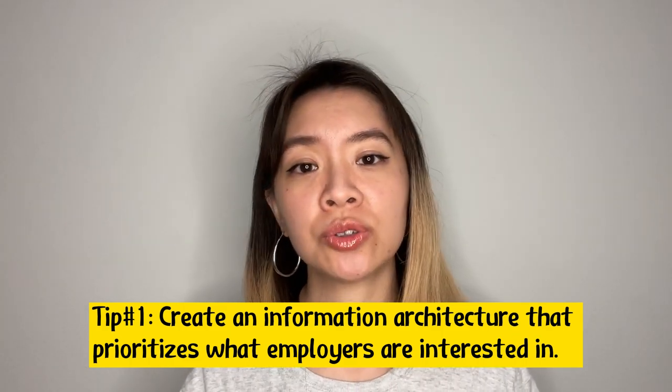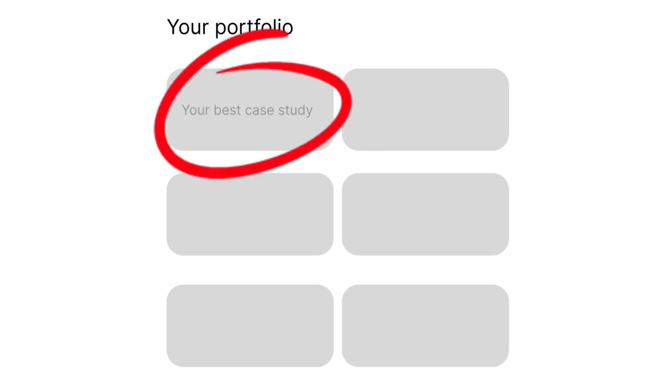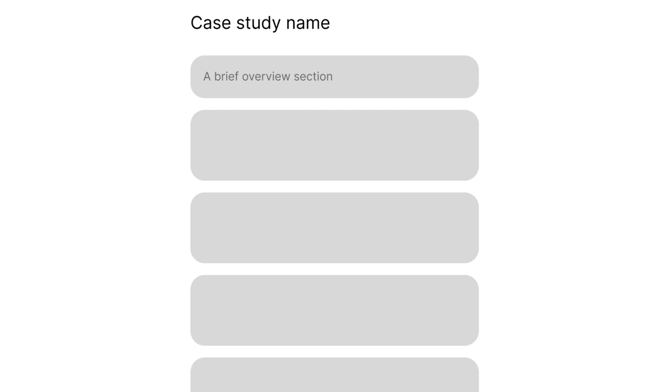Tip number one: rank things that really interest employers. For example, if one of your case studies is comprehensive and can demonstrate a lot of your skills, show that as the star project at the most noticeable location in your portfolio. Similarly, for case study structure, I recommend having a brief overview section at the beginning to give a snapshot of key points — covering the background, target audiences, problems you're solving, proposals, and end results. Even if a hiring manager only has one minute, they'll get all the signals they need from the overview section.